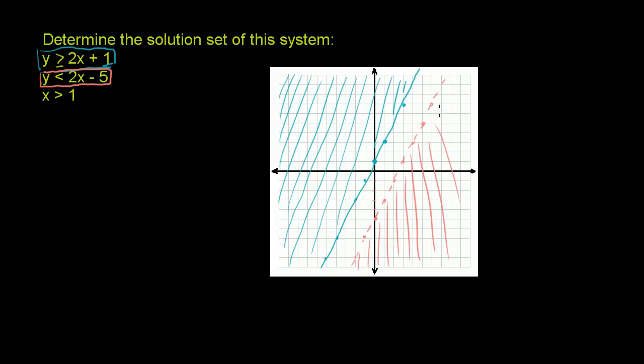So before we even get to this last inequality, in order for there to be something that satisfies both of these inequalities, it has to be in both of their solution sets. But as you can see, their solution sets are completely non-overlapping. There's no point on the xy plane that is in both of these solution sets. They're separated by this kind of no man's land between these two parallel lines.